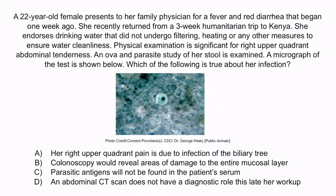A: Her right upper quadrant pain is due to infection of the biliary tree. B: Colonoscopy would reveal areas of damage to the entire mucosal layer. C: Parasitic antigens will not be found in the patient's serum. Or D: An abdominal CT scan does not have a diagnostic role this late in her workup.